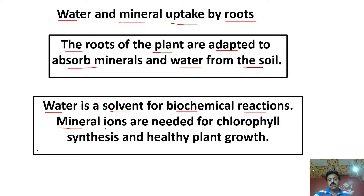Minerals are the ions that are needed for chlorophyll synthesis. In chlorophyll synthesis, there is a very important ion — magnesium ion — which is centrally located in chlorophyll molecules. These minerals are the ones that promote the plant's health in order to get healthy plant growth.